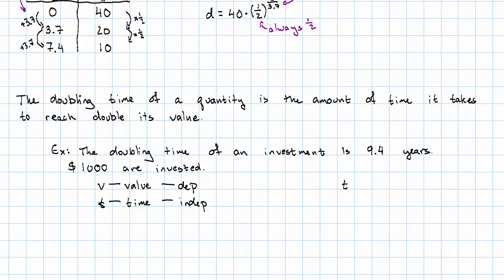When we first make the investment, it's worth $1,000. Then, every time 9.4 years pass, the value doubles—it's multiplied by 2. After 9.4 years, the investment is worth $2,000.